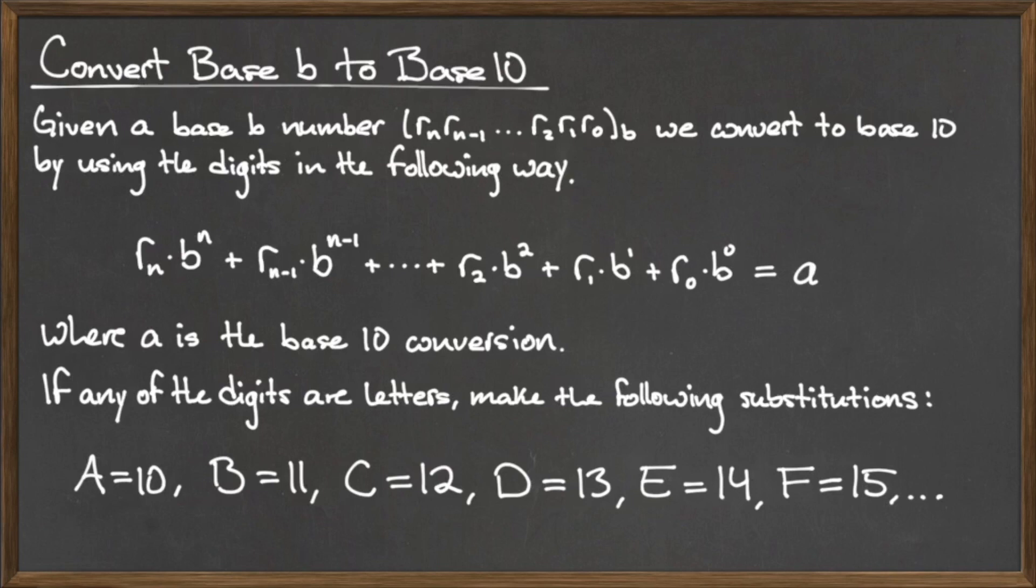Since we only want to use unique symbols, for numbers that are greater than or equal to 10, we perform a variable substitution using capital letters of the alphabet. For example, the number 10 will become the variable capital A, the number 11 will become the symbol capital B, and so on.